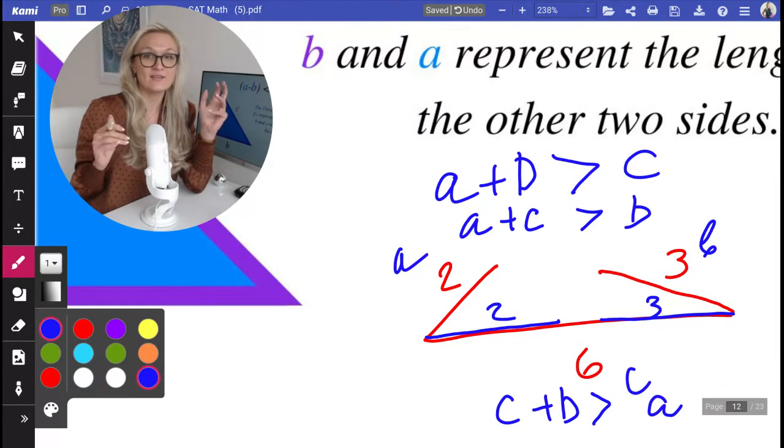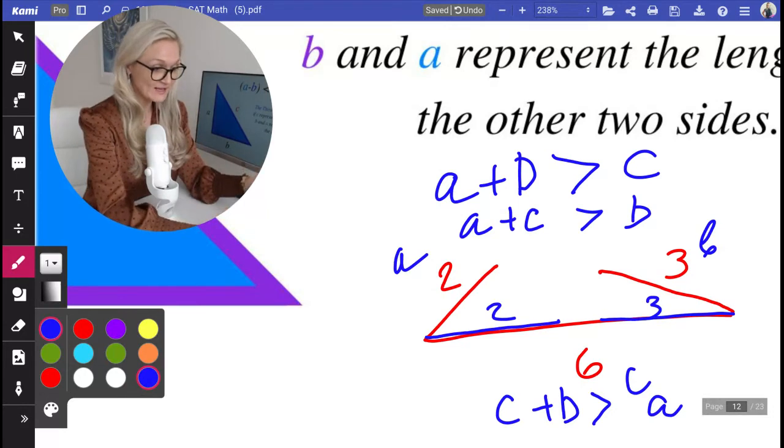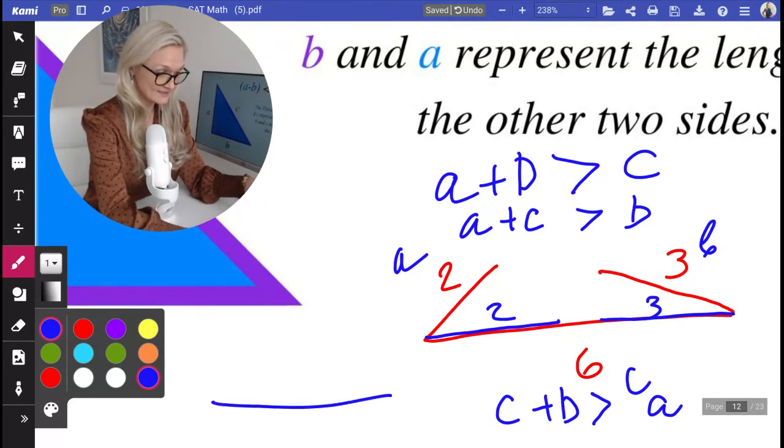Yes, but that would not be a triangle. If they equal, let's say one side is six, and this side is two, and this side is four.